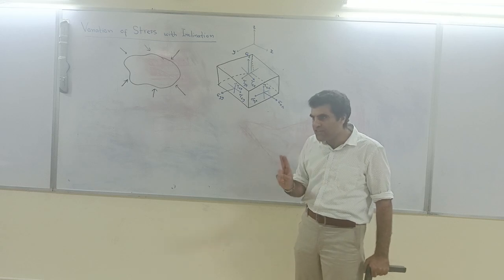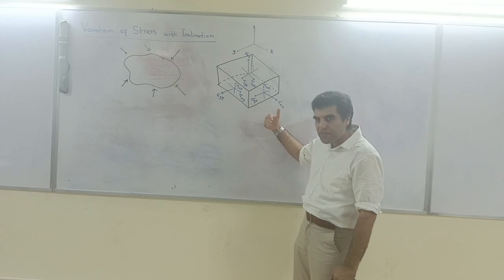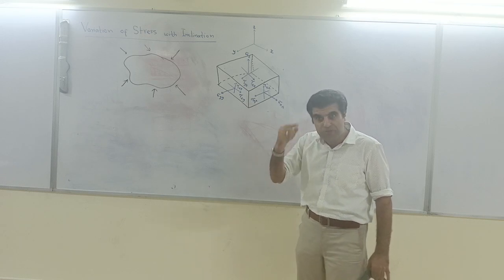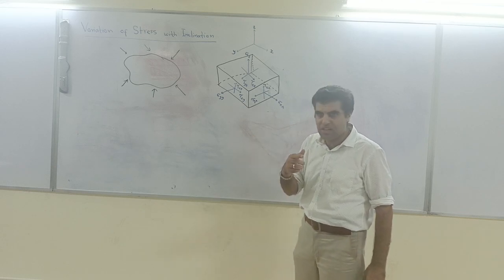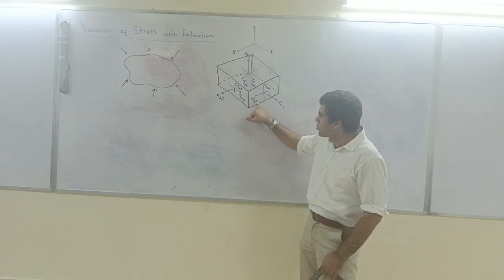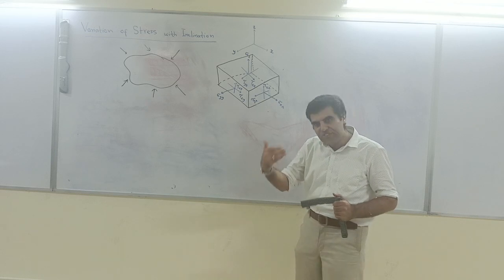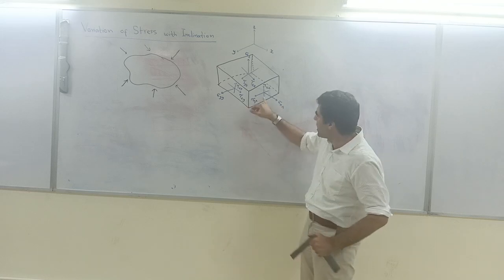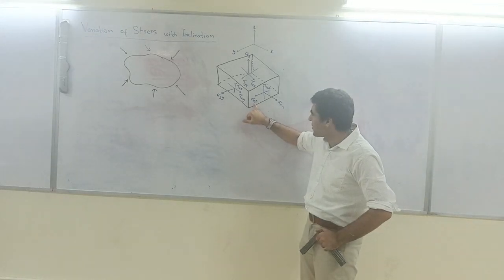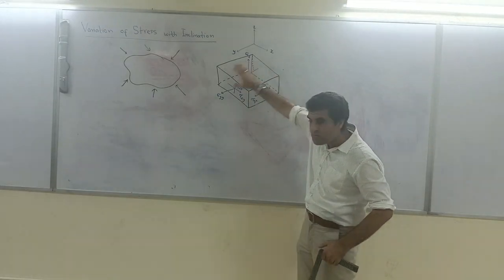We introduce two subscripts. The first subscript tells us the direction of the stress — remembering that stress is force divided by area, and the force is directed along a particular axis, so the stress is also in that direction. The second subscript tells us the outward-drawn normal of the face. For example, if the outward normal is x and the stress is in the direction of y, we call it shear because it is parallel to the face.